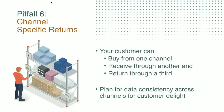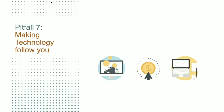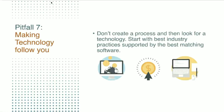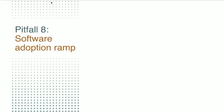Another common pitfall: you need technology to be a true omni-channel seller, but you cannot invent your own process and then search for software that perfectly fits it. You may find something close to what you desire, but you need to tweak your processes to match that software to avoid friction between what's entered in the system and what's followed in your store or warehouse. A related pitfall is that sellers get intimidated by how hard it is to adopt new software — we call this the software adoption ramp, and we recommend you embrace it, not avoid it.